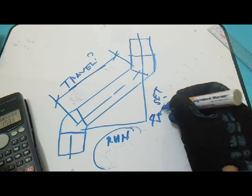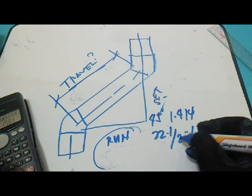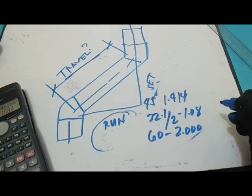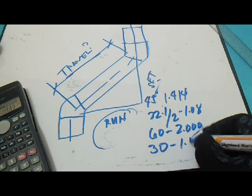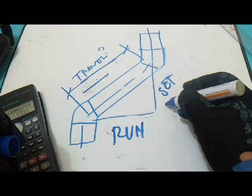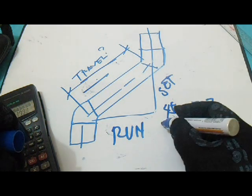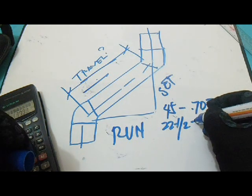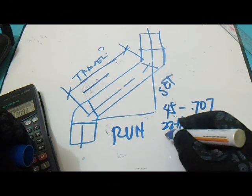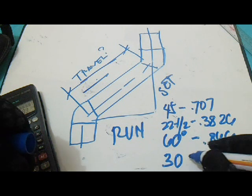For the 45 and for the 22 and a half degrees: 1.082. For the 60 degrees is 2.000, and for the 30 degrees is 1.154. Okay, if the given is travel we will find this run. So the formula for the run for the 45 degrees: multiply it 0.707. For the 22 and a half: multiply it to 0.3826. And for the 60 degrees: multiply it to 0.866. And for the 30 degrees: multiply it to 0.500.